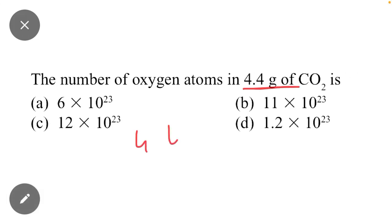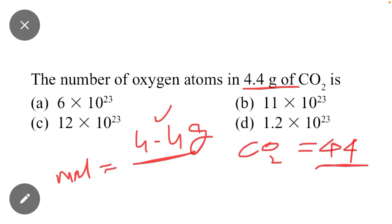Given mass is 4.4 grams and the molecule is CO₂ with atomic mass 44. First of all we will calculate the number of moles. To calculate number of moles, given mass is divided by molar mass 44.